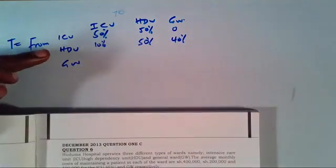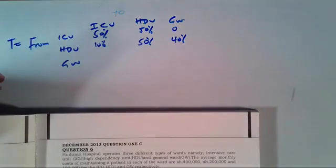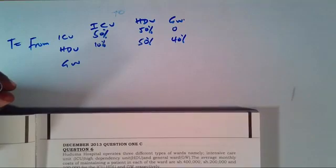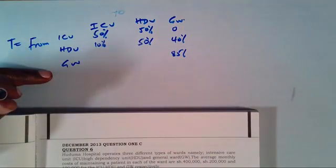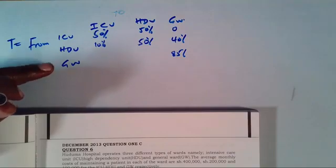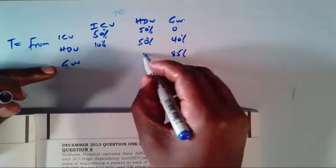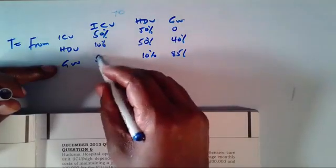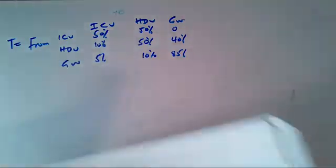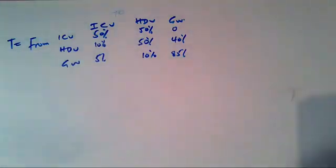For movements from General Ward: we are told 85% of patients in General Ward at the beginning of the month will remain in General Ward at end of month. 10% will move from General Ward to HDU, and 5% will move from General Ward to ICU.